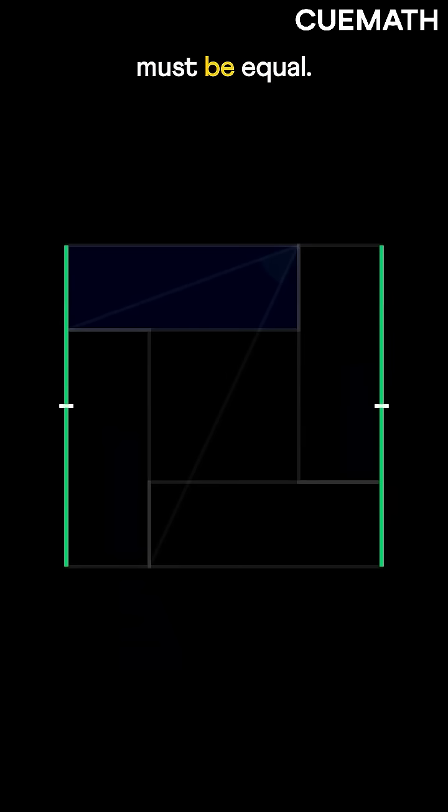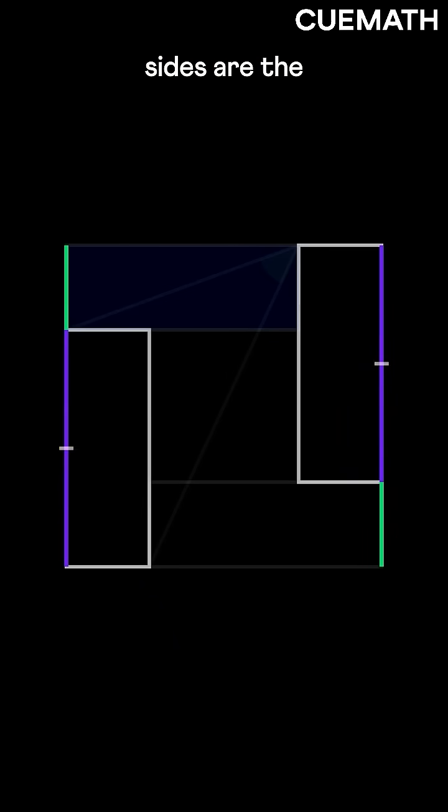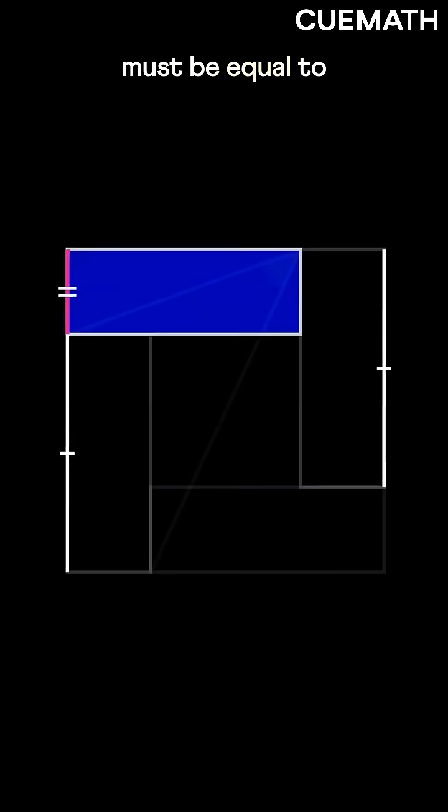Now, by symmetry, these two lengths must be equal. Since the longer sides are the same, the shorter side of the blue rectangle must be equal to this one.